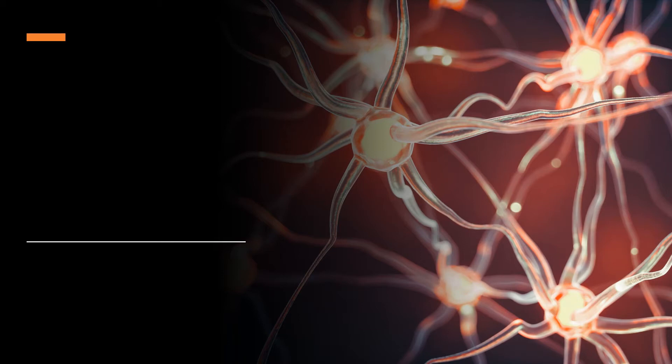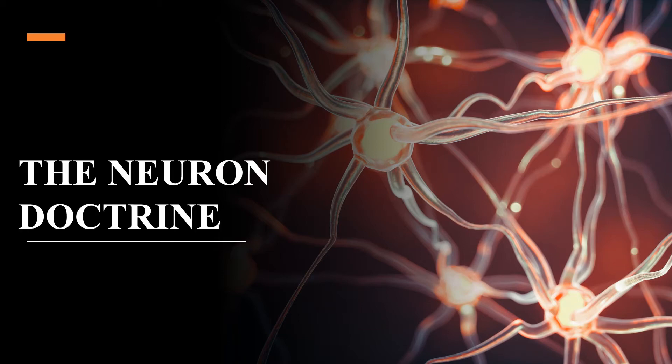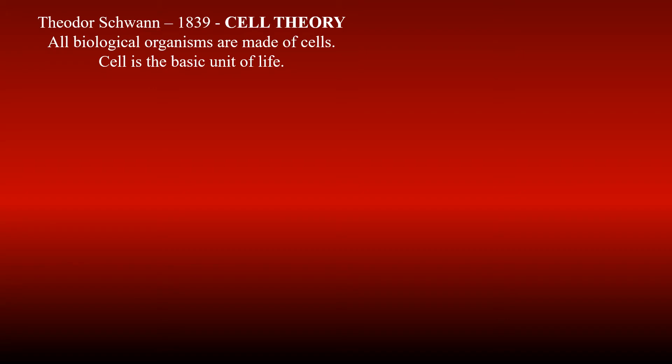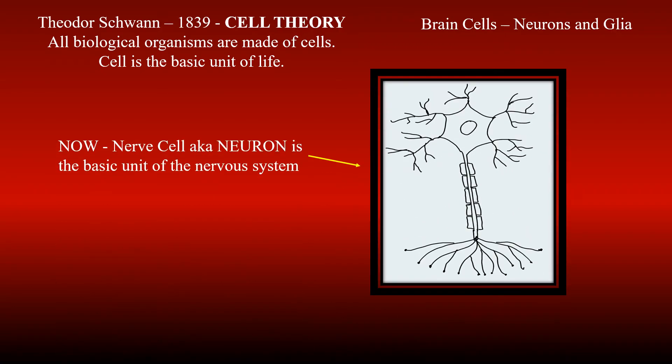Hi and welcome to Neuroscience for Everyone. In this video I'm going to tell you about a concept called the neuron doctrine. Have you heard about the cell theory? It states that all biological organisms are made of cells, and a cell is the basic unit of life. The nervous system, which comprises the brain and spinal cord, also has cells called neurons and glia. The neuron is now said to be the basic unit of the nervous system.